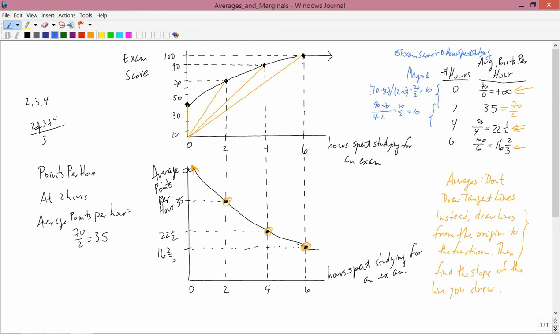Now actually, I made a mistake a little bit earlier. When I was calculating the marginal when we went between zero and two hours, I said 70 minus 50. It actually should be 70 minus 40, and 70 minus 40 is 30. So instead of 10, that should be 15. Then finally, when you go from 4 to 6 hours, the change in exam score is the difference between 100 and 90. The change in hours studying is the difference between 6 and 4, so 10 over 2, which is 5.